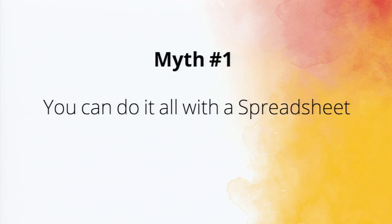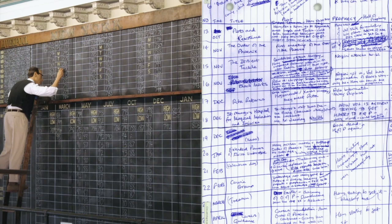Let's jump into myth number one. A lot of business owners start out thinking a spreadsheet is the end-all, do-all. And to a certain extent it really is — spreadsheets are incredibly powerful and have come a long way. Back in the day, if you were doing handicaps or watching manual stock tickers, there was a lot of chalk, cells, rows, and columns — pure madness. If one value was changing, you'd have to change other values.